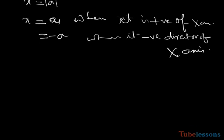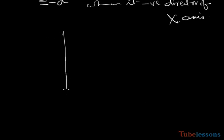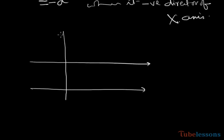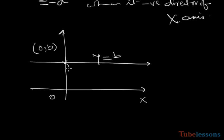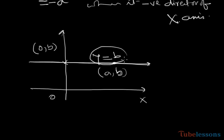Next we discuss any line which is parallel to x-axis. The required line has equation y equals to b. If a comma b is any point on this line, we draw a line that passes through a comma b and is parallel to x-axis — that is the unique line — and its equation is y equals to b.